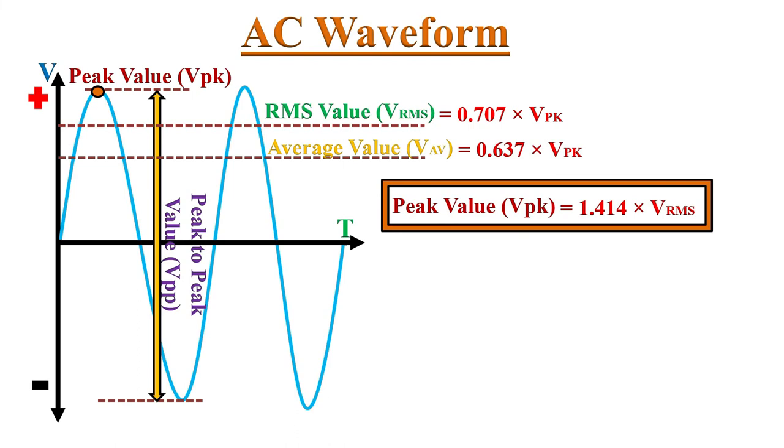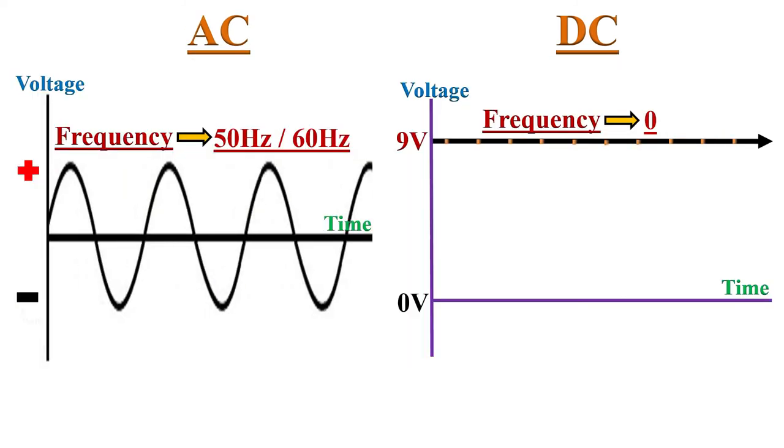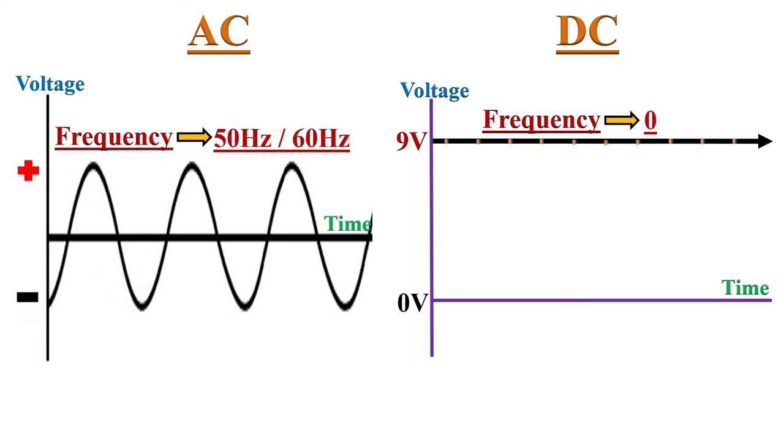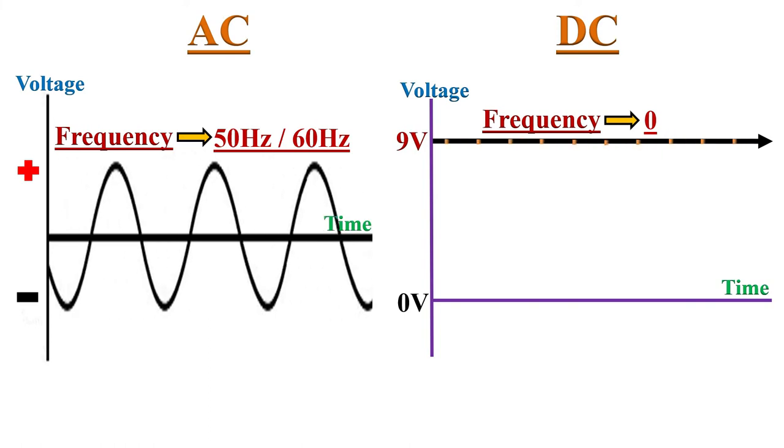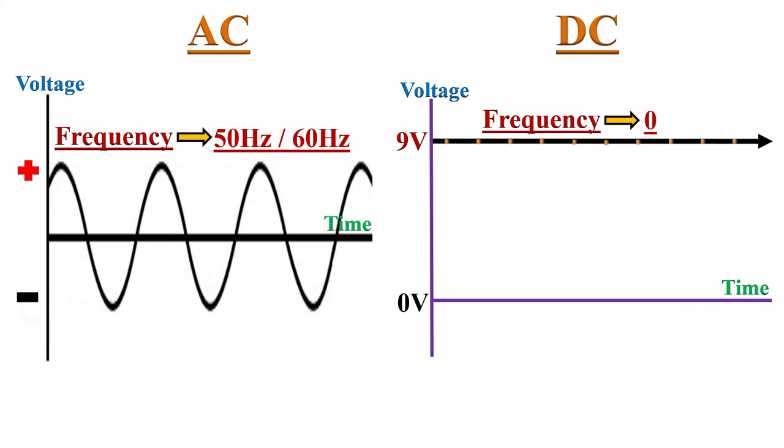Let's discuss difference between alternating current and direct current. Alternating current changes its direction repeatedly during electric flow. While direct current does not change its direction during flow. Alternating current has frequency of 50 or 60 hertz. While direct current doesn't have frequency. Its frequency is 0.